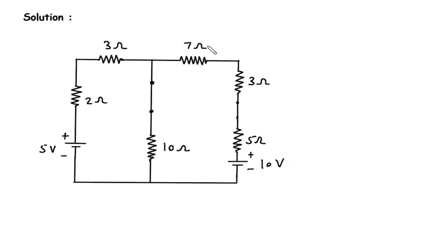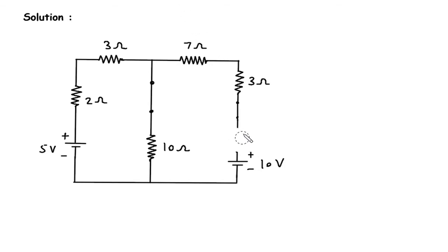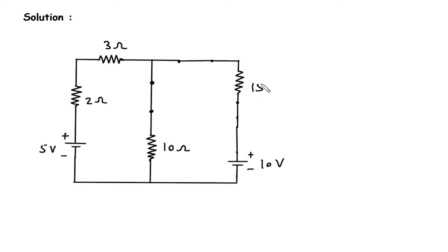Now here we can also see that this 7 ohm, 3 ohm, and 5 ohm are connected in series. So their equivalent resistance will be 7 plus 3 is 10, and 10 plus 5 is 15. So this will be a 15 ohm resistance.